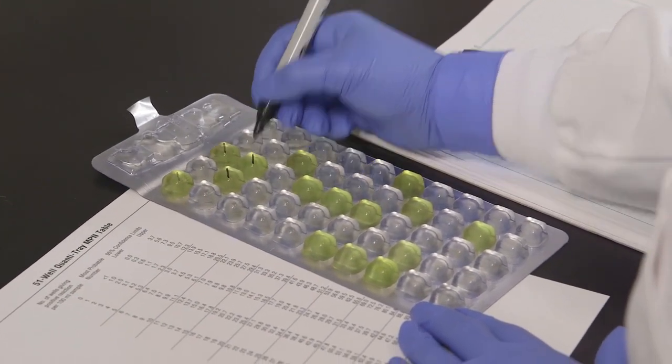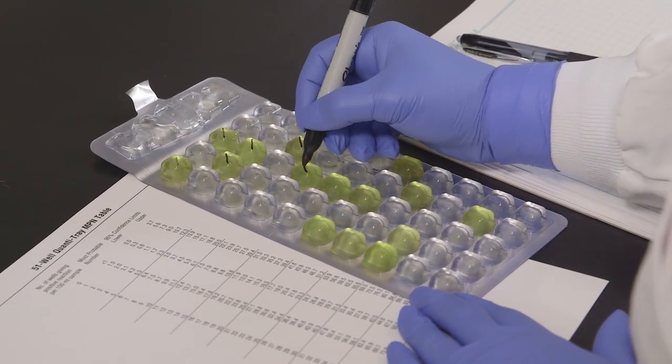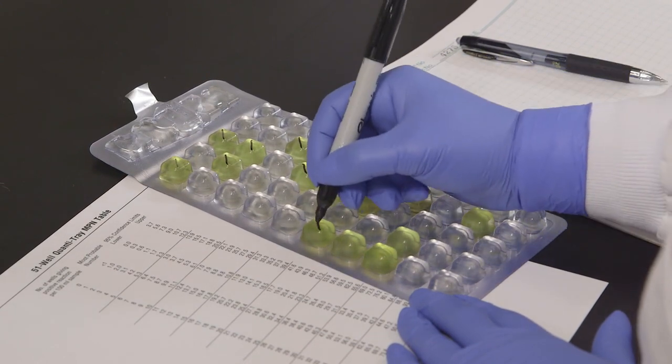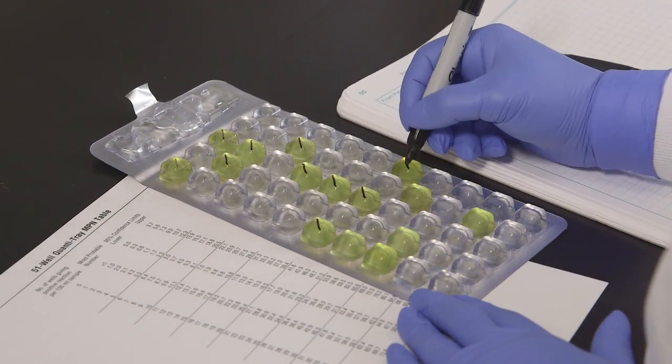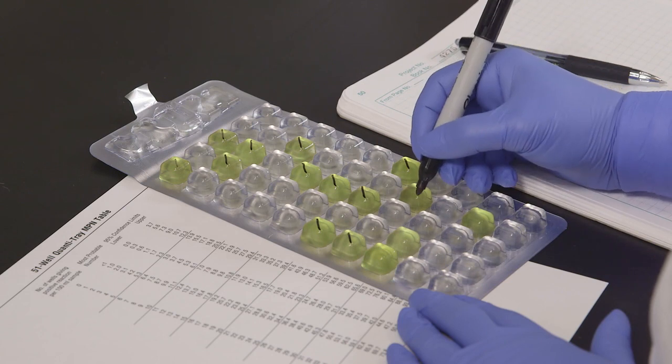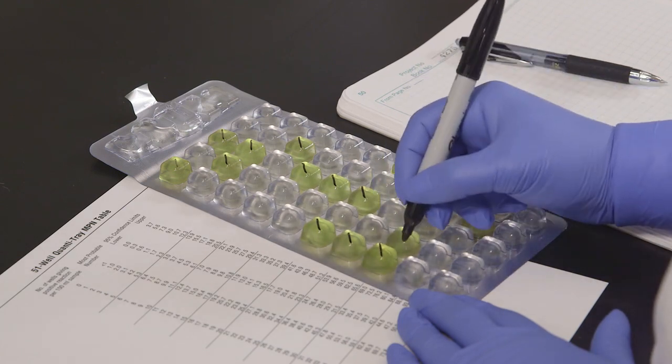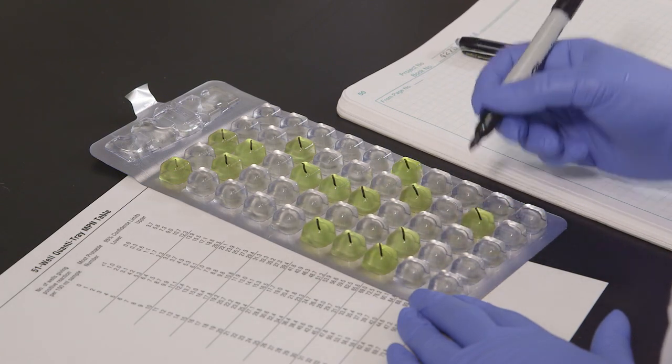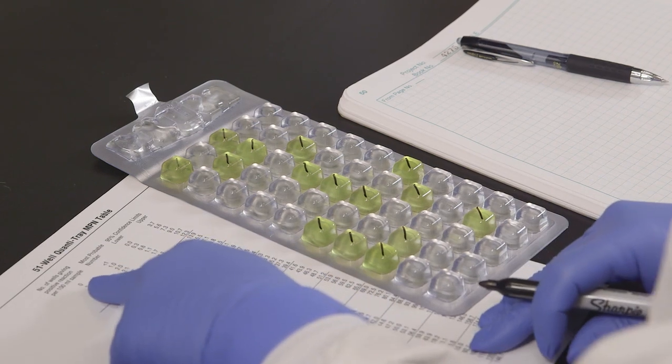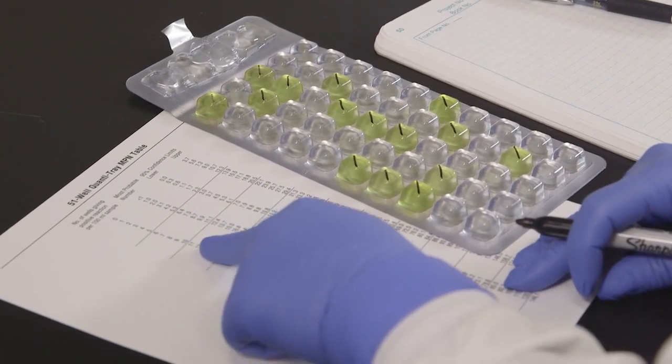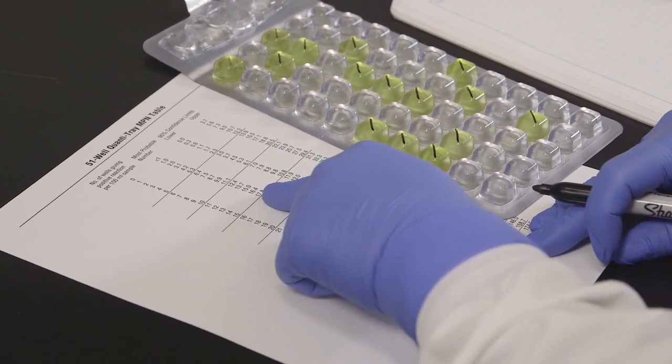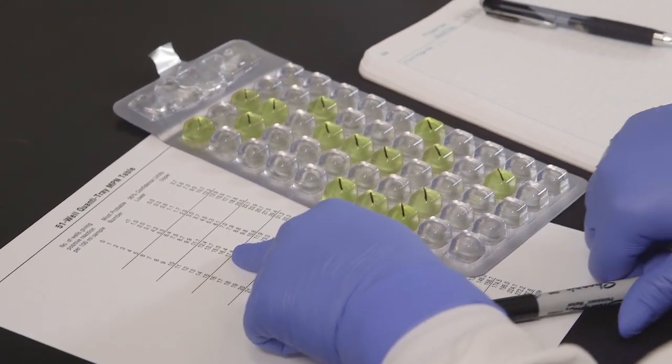To determine the number of total coliforms, count the yellow wells that are equal to or greater than the comparator, and then refer to the MPN table included with the QuantiTrays. The most probable number of total coliforms for this example is 17.8 per 100 ml. If using QuantiTray 2000, count the overflow well as a large well.